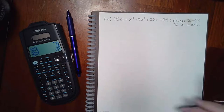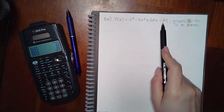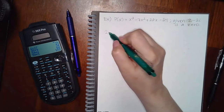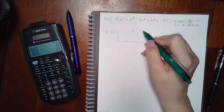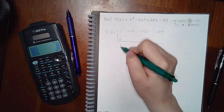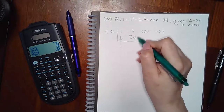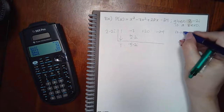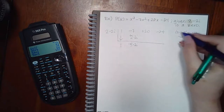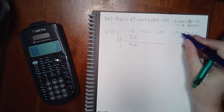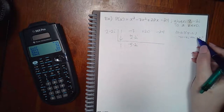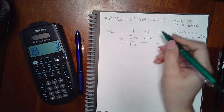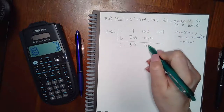Here's the corrected problem: x cubed minus 7x squared plus 20x minus 24, with a given zero of positive 2 minus 2i. We put 2 minus 2i on the outside, write the coefficients, and start synthetic division. Bringing down and multiplying gives negative 5 minus 2i. Then we compute negative 10, minus 4i, plus 10i, plus 4i squared, which becomes negative 4. So we get negative 14 plus 6i.